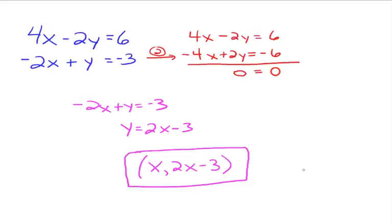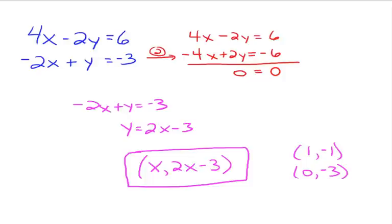That's a much better way to express the answer than just saying there are an infinite number of solutions, because this tells us the form of what all those ordered pairs would be. For example, if x is 1, you plug in 1 and get y equals 2 minus 3, so the ordered pair (1, negative 1) is a solution. If x is 0, the y value is negative 3, so (0, negative 3) is also a solution. You can choose any value for x, plug it in, and get a corresponding y value that forms a valid solution.